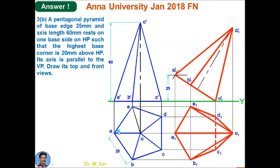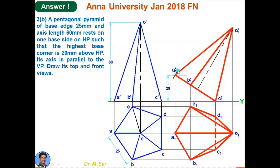Draw lines joining all five corners — those are the slant edges. Get the corresponding front view. To tilt: base edge C-dash D-dash must be on the ground and the opposite corner A-dash must be at height 20 mm from XY. Draw a locus 20 mm above XY, then mark C1-dash on XY. Set the compass to the distance C-dash to A-dash in the initial front view, and with C1-dash as center, cut an arc on the 20 mm locus to get A1-dash.